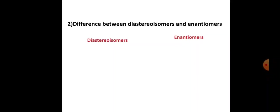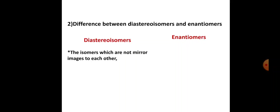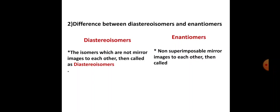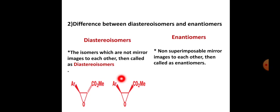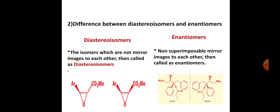Next: the difference between diastereomers and enantiomers. In diastereomers, the isomers which are not mirror images of each other are called diastereomers. In the case of enantiomers, the non-superimposable mirror images of each other are called enantiomers. Here a simple example of a diastereomer: these two compounds are not mirror images of each other. And in the case of enantiomers, they are mirror images of each other — therefore it is an example of enantiomers.